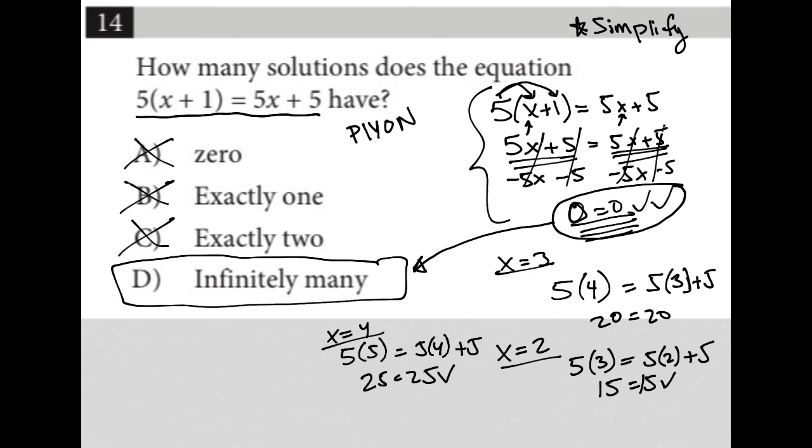So plug in your own number as in: if I plug something in for x and it works, then zero cannot be correct. If I do it again and it works again with another x value, then exactly one cannot be correct. If I do it again, then exactly two cannot be correct, leaving me with infinitely many as my only option.